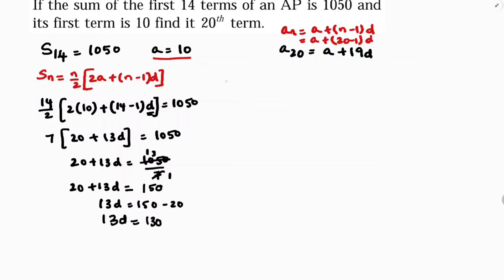So it is very clear, D value is 130 by 13, so D is 10, the value of D is 10.